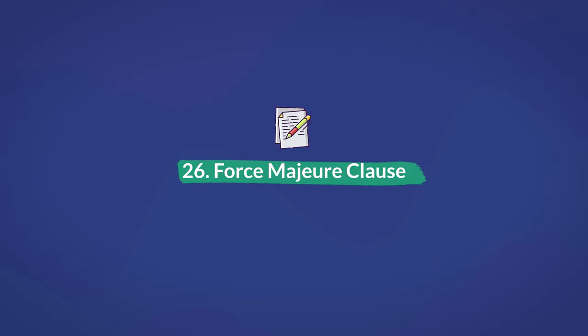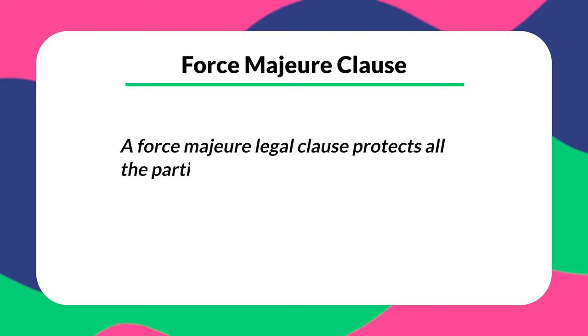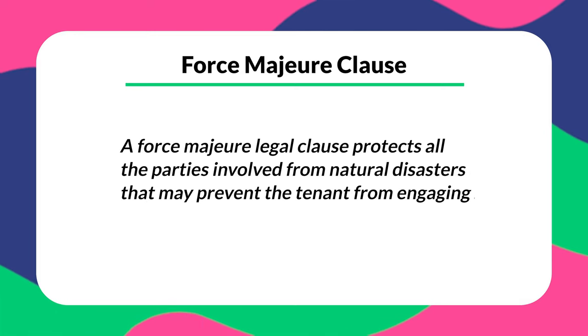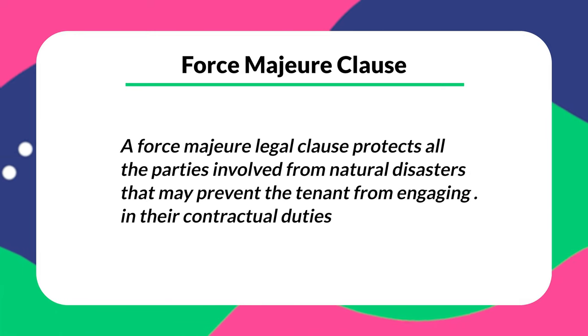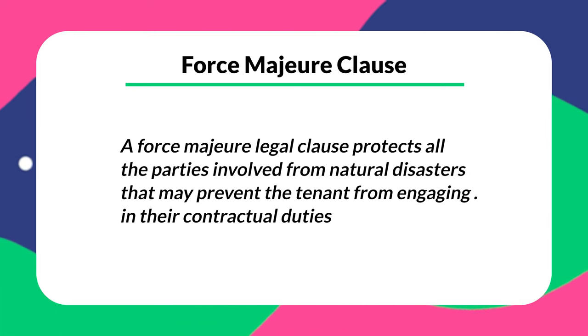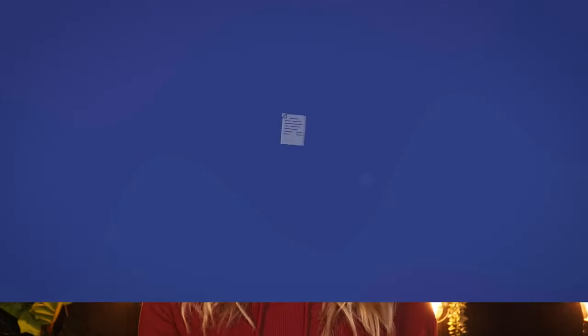Number twenty-six is the force majeure clause. According to general law, a force majeure legal clause protects all parties involved from natural disasters that prevent the tenant from engaging in their contractual duties, such as paying a late fee on a particular day. Keep in mind that these natural disasters are required to be specified in the lease term document. When this event is over, the involved parties can resume their responsibilities.